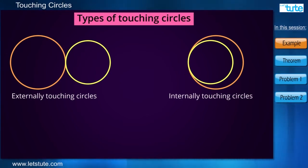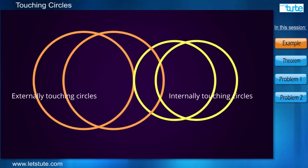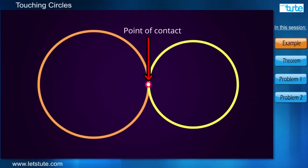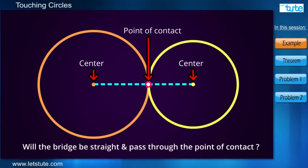Here in this session we will be majorly learning about the relationship between the point of contact and the centers of these circles. Here we will try to make a bridge from the center of the circles. Then will it be straight?